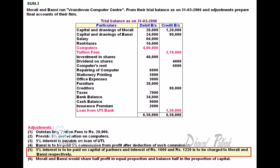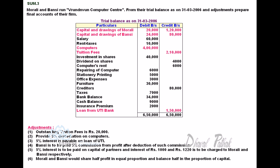5% Interest is to be paid on Capital of Partners. Interest of Rs. 1,000 and Rs. 1,220 is to be charged to Morley and Bunsi respectively as Interest on Drawings. Morley and Bunsi would share half the profit in equal proportion and the balance half in the proportion of capital.